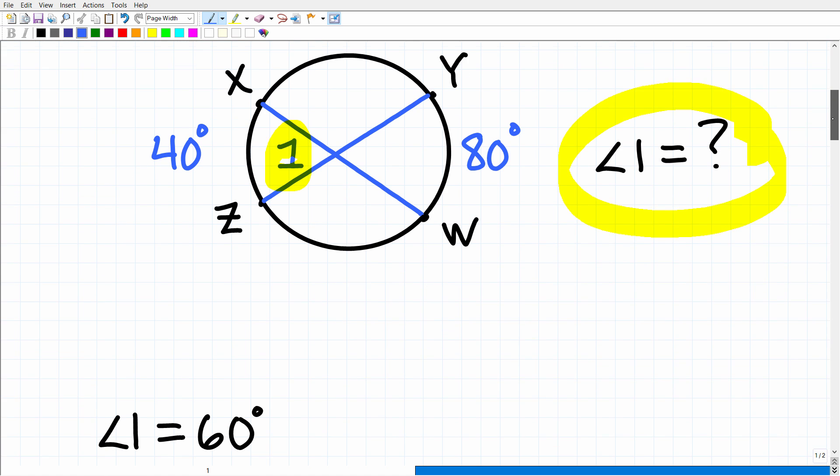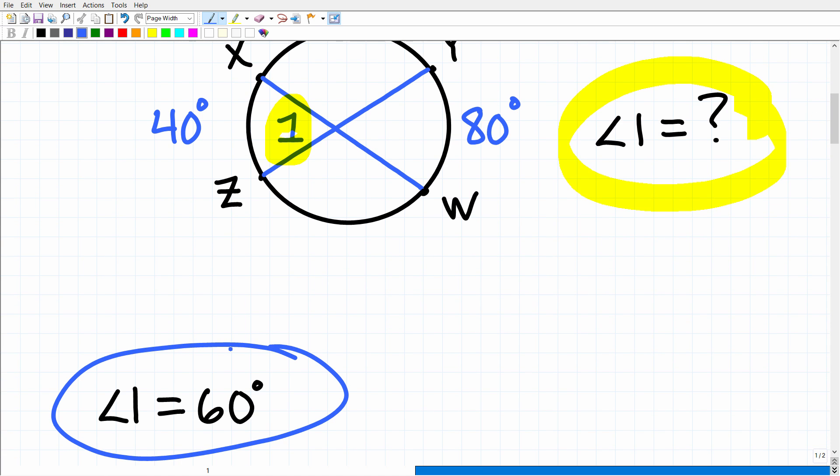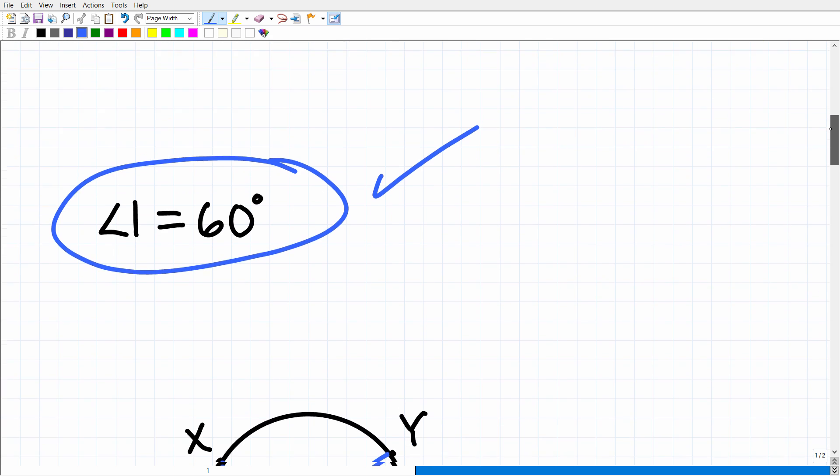But before I show you the formula, let's take a look at the answer. The correct answer is angle 1 is equal to 60 degrees. Now, if you got this right, that is great. But in no means is this an indication that you are fully prepared. There is going to be a lot of advanced math on this particular Praxis exam. But that is still very good that you remembered how to do this simple problem. So let's go ahead and get into this right now.